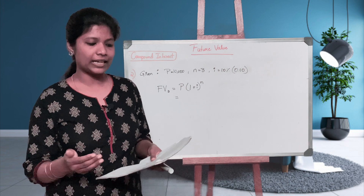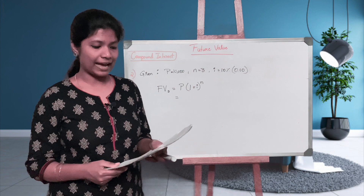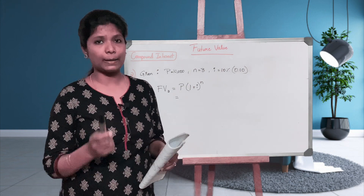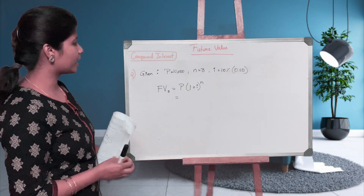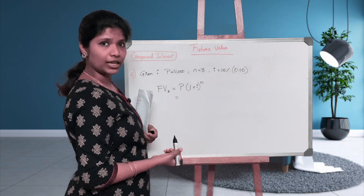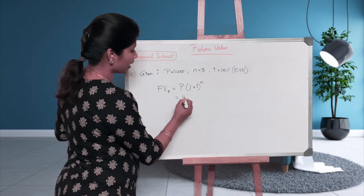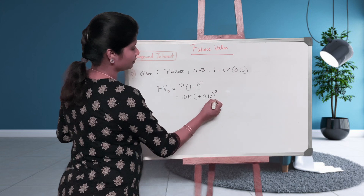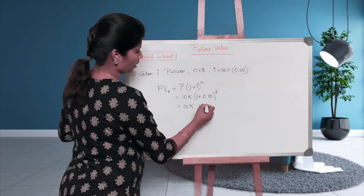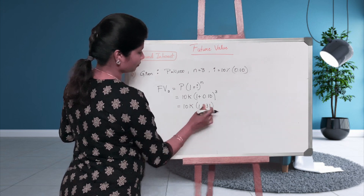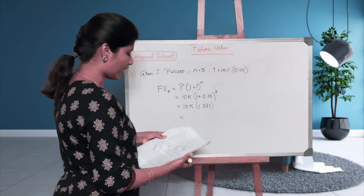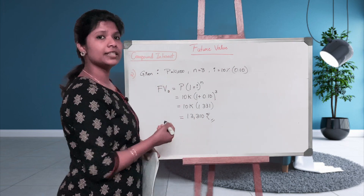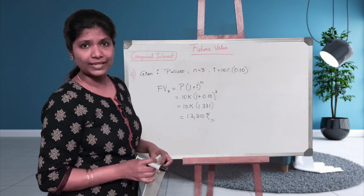The third question: Mr. X, a finance manager in ABC Limited, invests surplus funds of 10,000 in a nationalized bank at 10% compounded per annum. How much will Mr. X have after 3 years? Given: Principal is 10,000, number of years is 3, rate is 10%. So: 10,000 multiplied by (1 plus 0.10) to the power of 3. Since 1.10 to the power of 3 equals 1.331, the answer is 13,310 rupees.